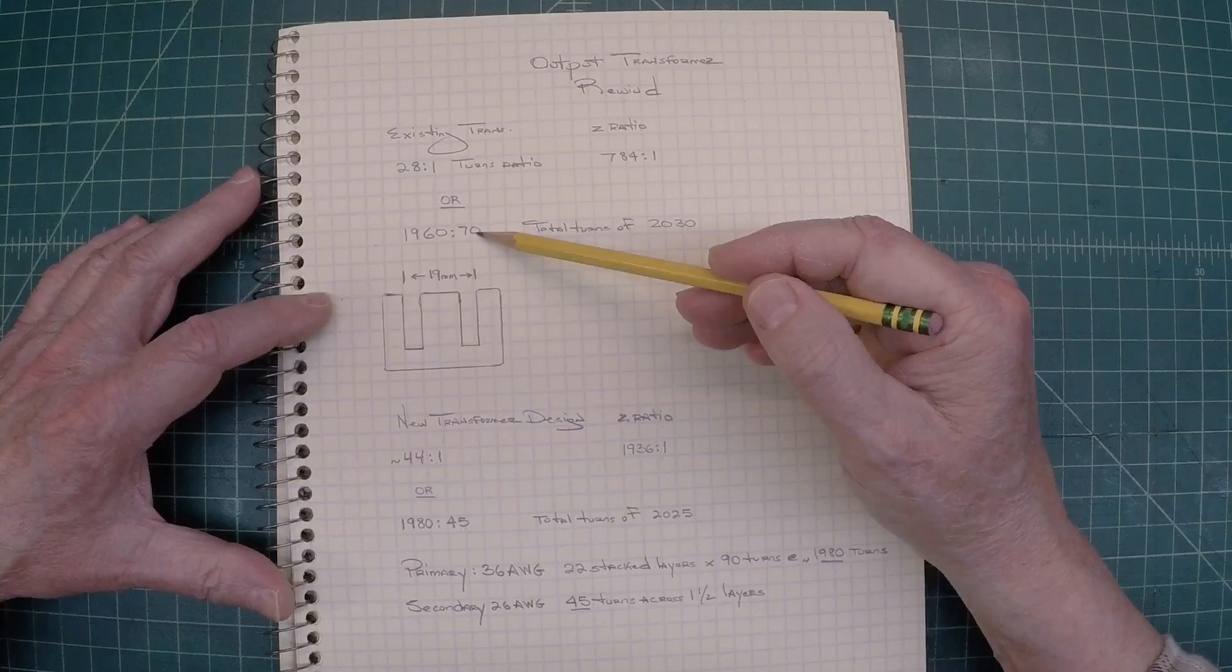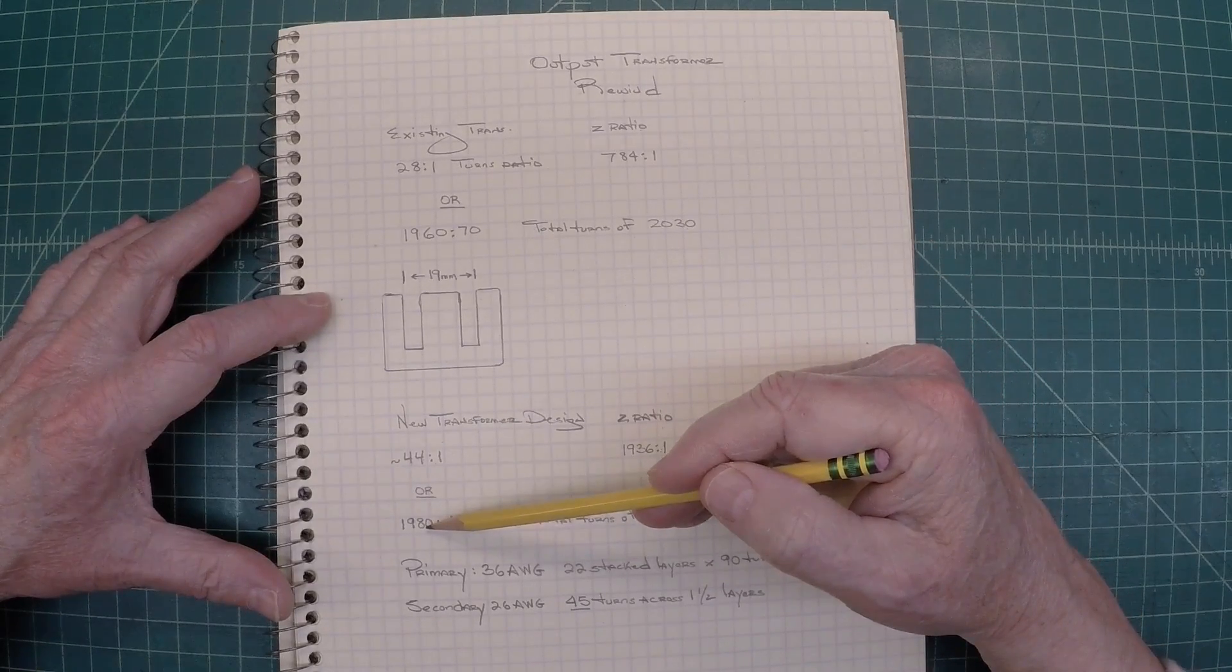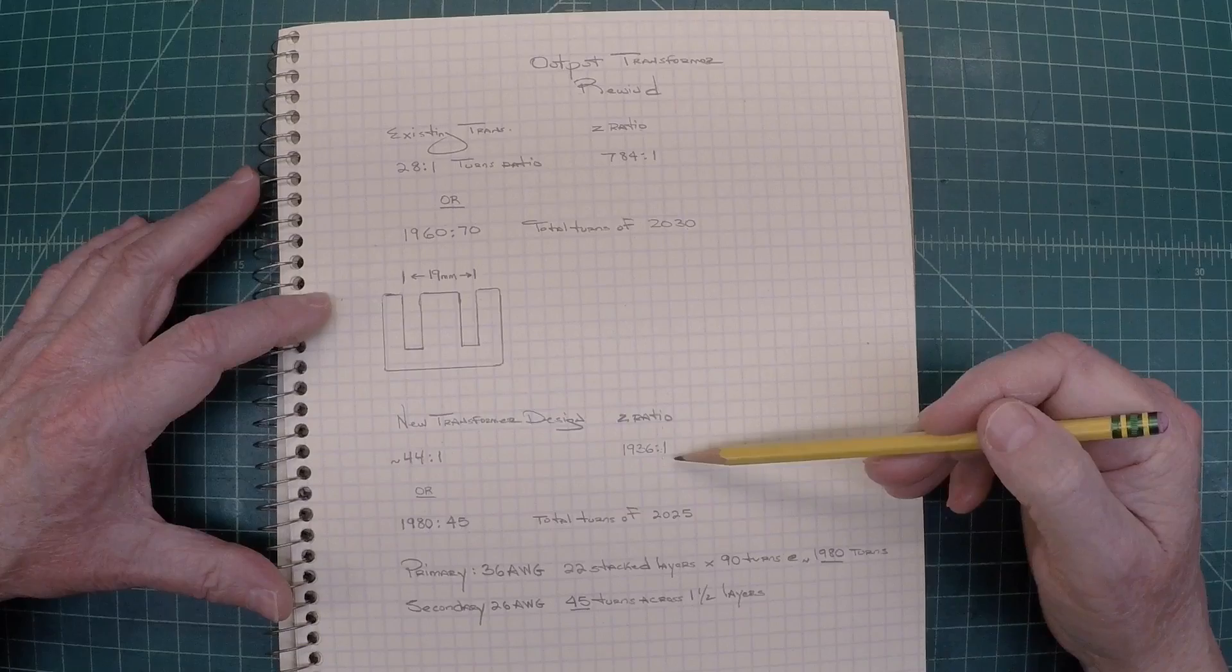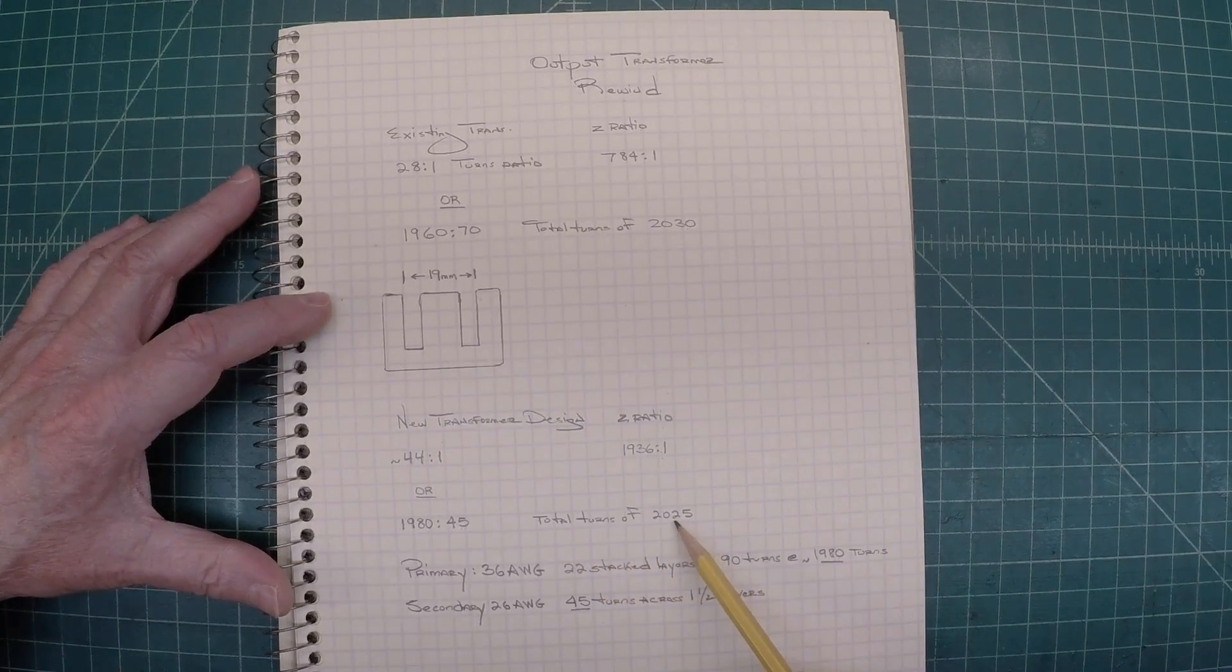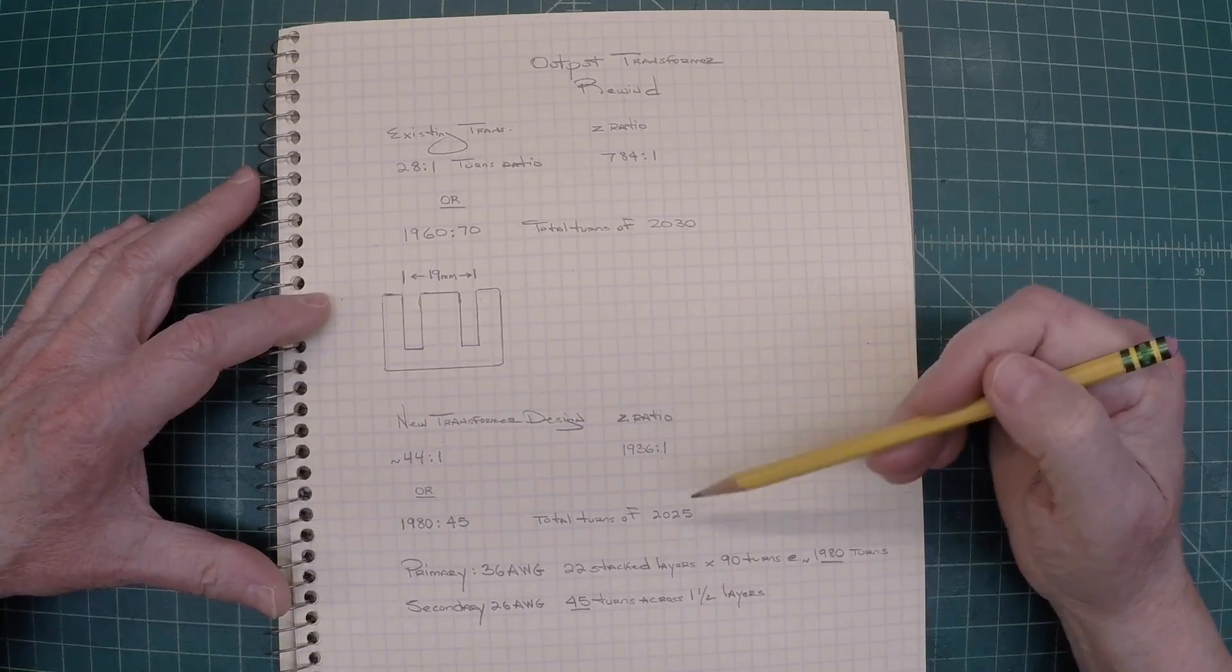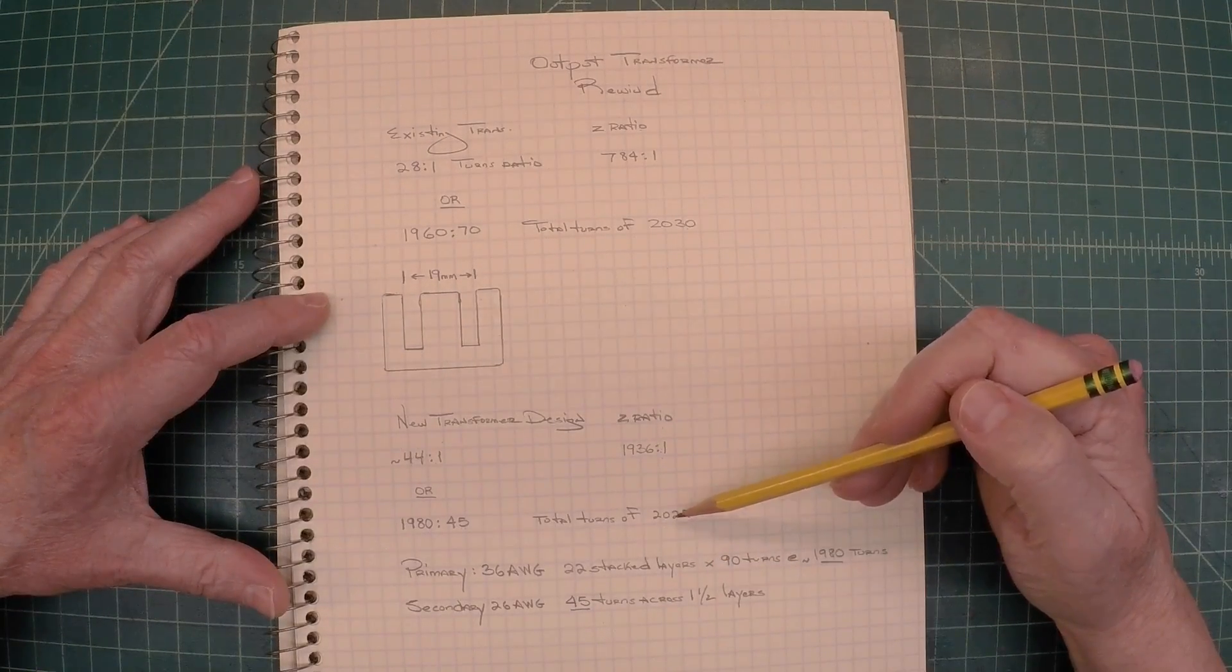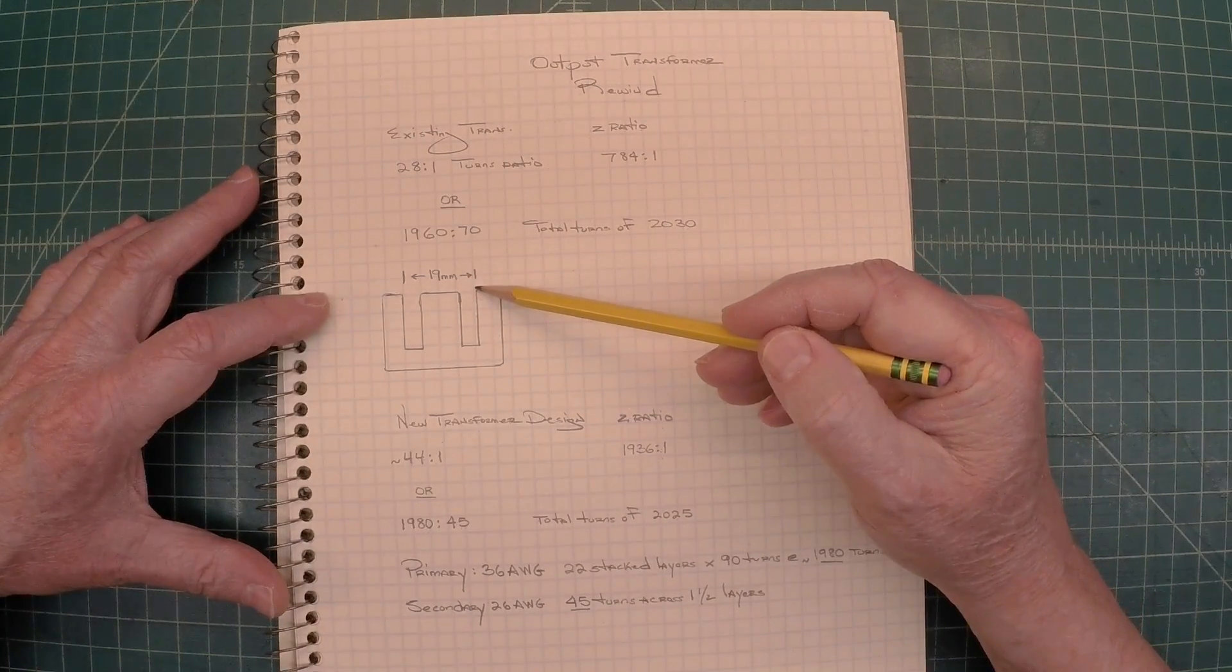So you can see I've cut the secondary side back some to match the 44 to 1 turns ratio and hopefully hit the impedance ratio of 1936 to 1. And you can see the total turns of 2025. So I'm really close to the original design, and hopefully I can wind this thing nice and tight and fit it inside this 19-millimeter window that I have to work in.